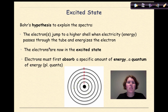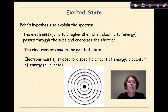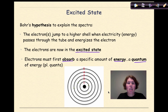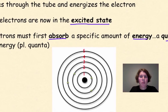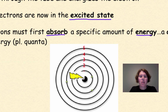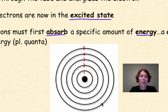Now let's talk about the concept of excited state. Bohr's hypothesis to explain the spectra is as follows: electrons would jump to a higher shell when electricity or energy passed through the tube and energized the electron. When these electrons gained energy, they were known to be in the excited state. Electrons must first absorb a specific amount of energy, which Bohr termed a quantum of energy. Here we have a simulation of electrons gaining energy and jumping to higher energy states — energy comes in and an electron jumps from a lower energy level to a higher energy level.